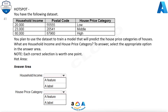You have the following dataset. You plan to use the dataset to train a model that will predict the house price categories of houses. What are household income and house price category? To answer, select the appropriate option in the answer area. Note, each correct selection is worth 1 point.